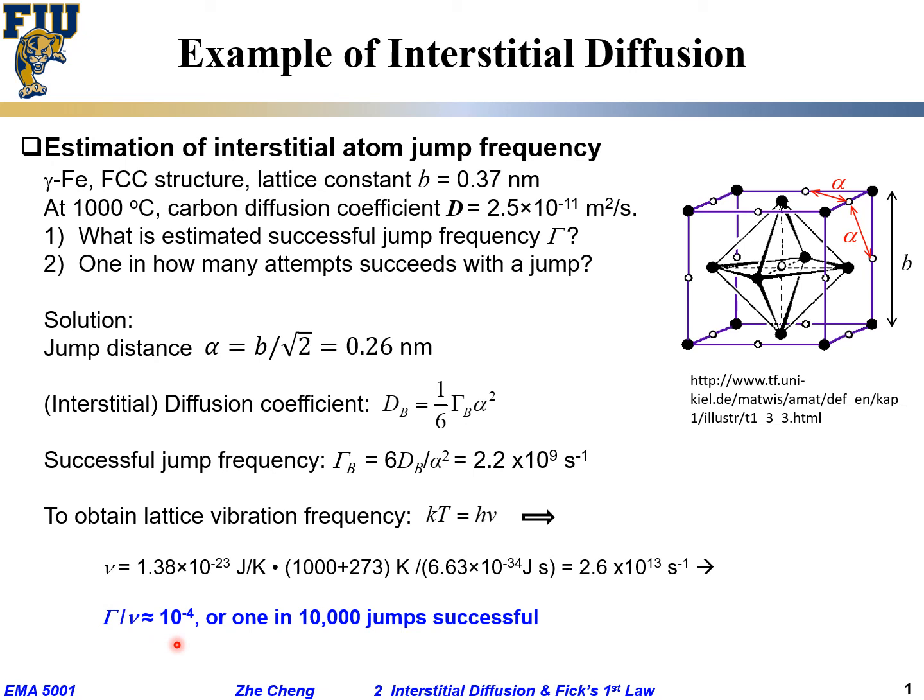It means 1 in 10,000 jumps is successful. It's 10,000 moves to the neighboring site. The atoms are always vibrating due to thermal vibration, but occasionally it jumps to the neighboring site.